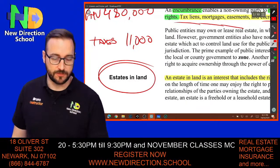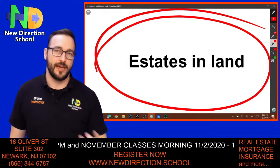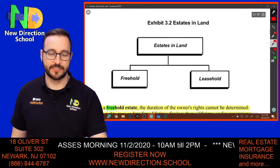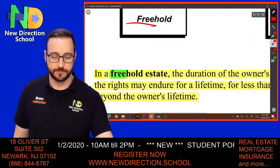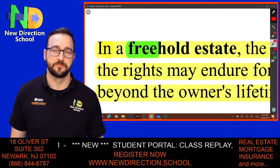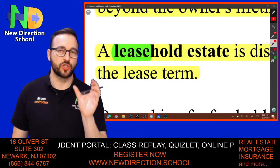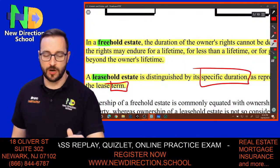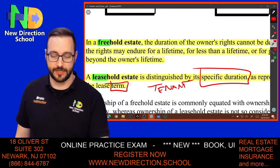An estate in lands is simple: estate means asset; in land means real property. Estates in lands can be freehold — ownership — or leasehold. Freeholds mean ownership; you can own the property for a lifetime or forever. Leaseholds have a specific duration, so there's a term — you are a tenant there for a particular period of time, not forever.